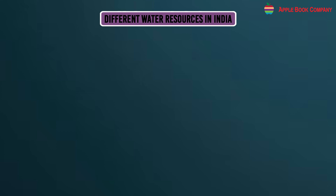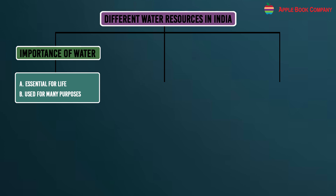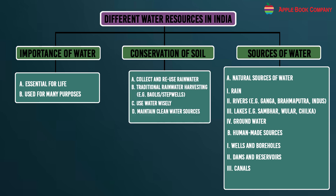Mind map — Different water resources in India. Importance of water: essential for life, used for many purposes. Sources of water — natural sources: rain, rivers (e.g., Ganga, Brahmaputra, Indus), lakes (e.g., Sambar, Ullar, Chilka), and groundwater. Human-made sources: wells and boreholes, dams and reservoirs, and canals. Conservation of water: collect and reuse rainwater, traditional rainwater harvesting methods (e.g., baulis, stepwells), use water wisely, and maintain clean water sources.